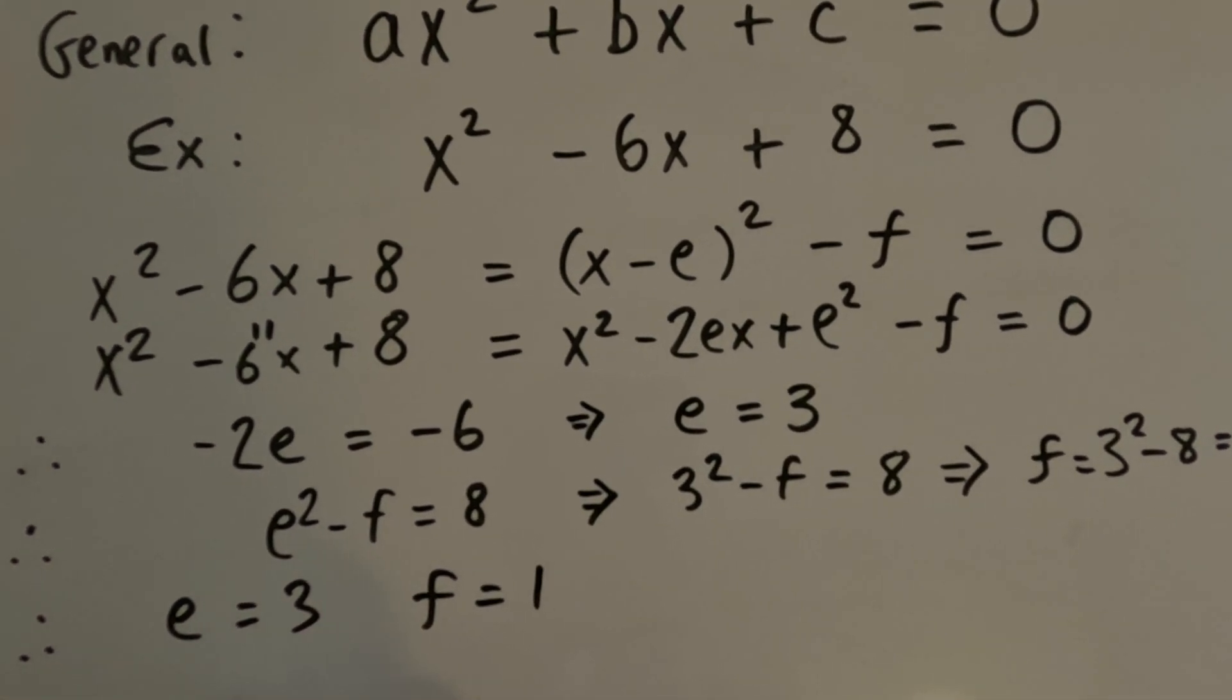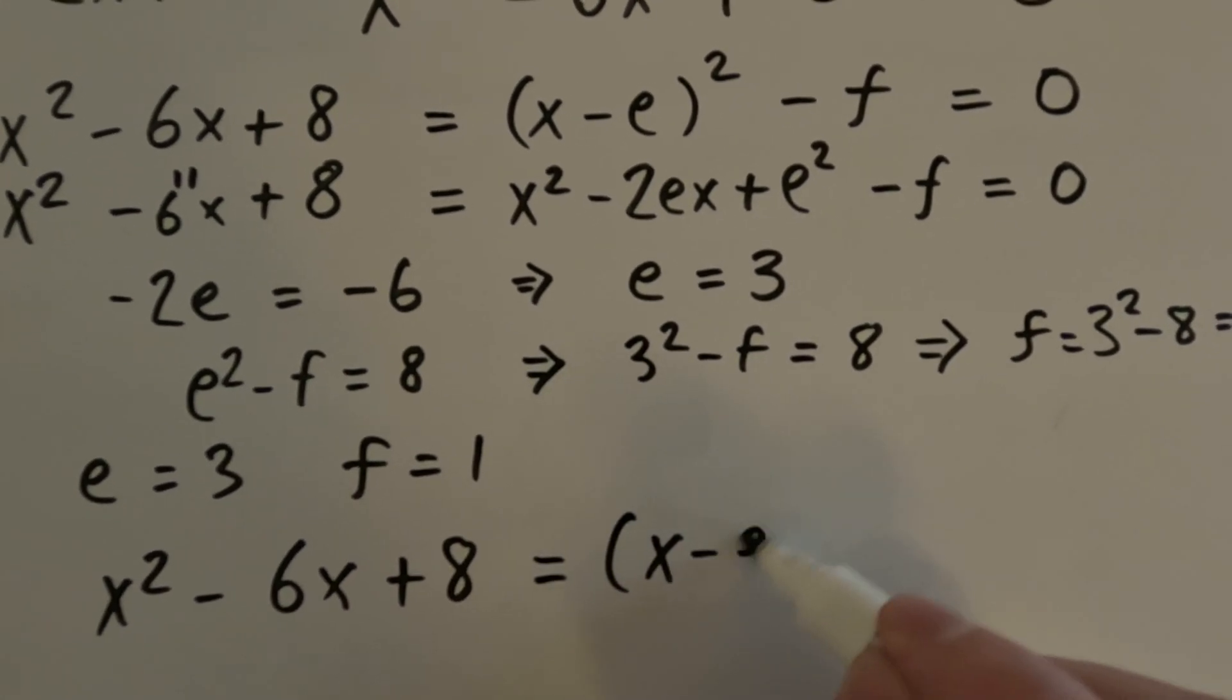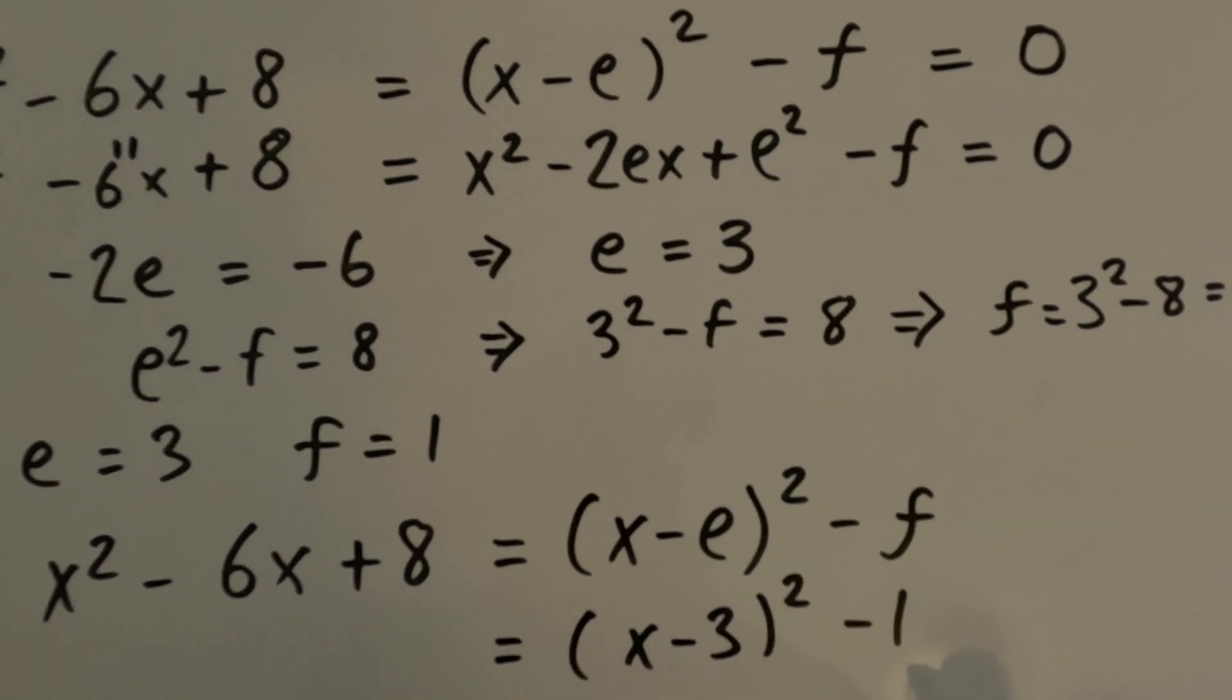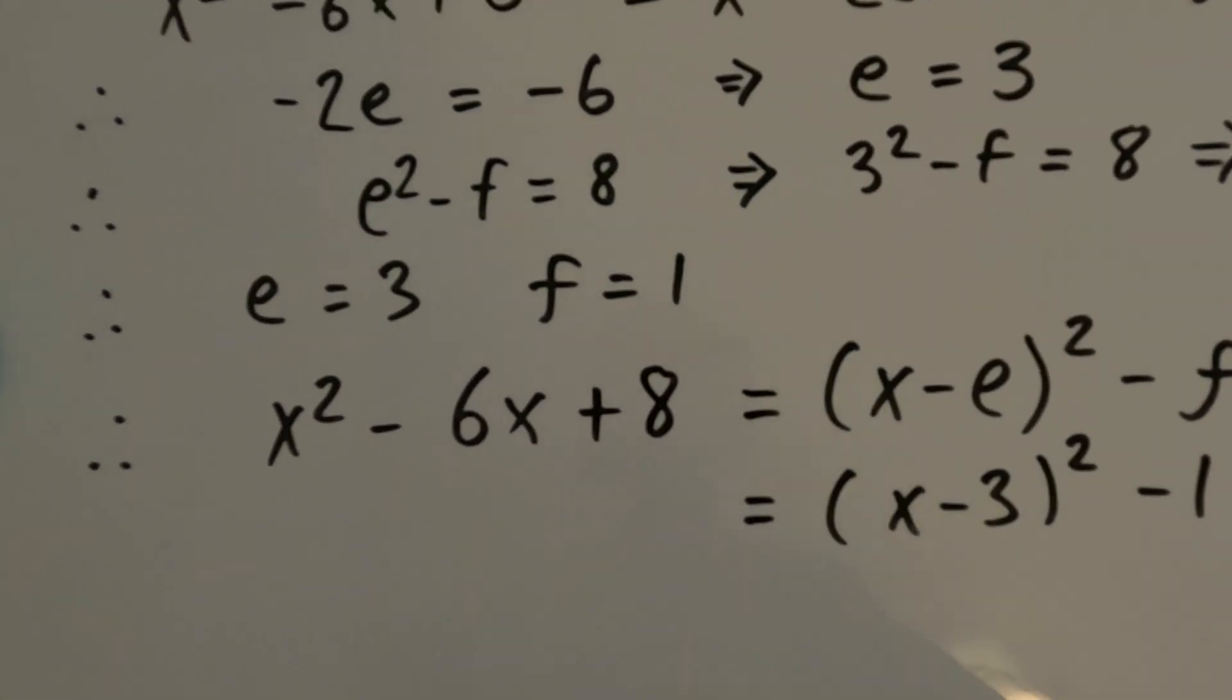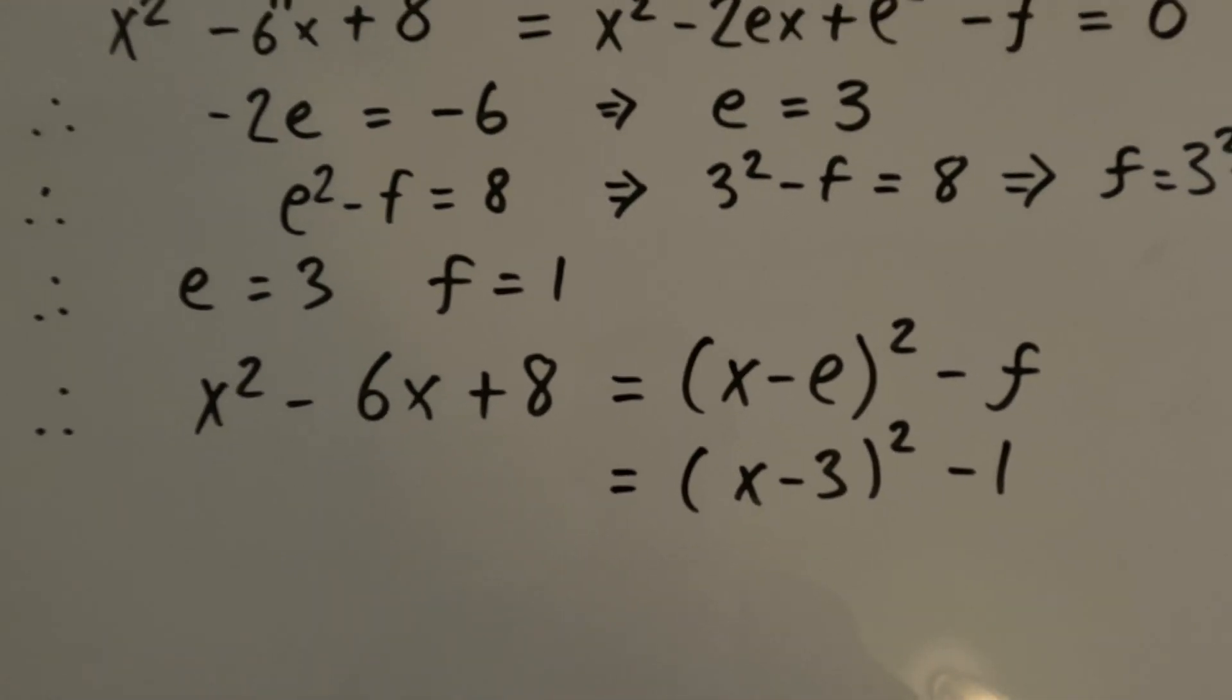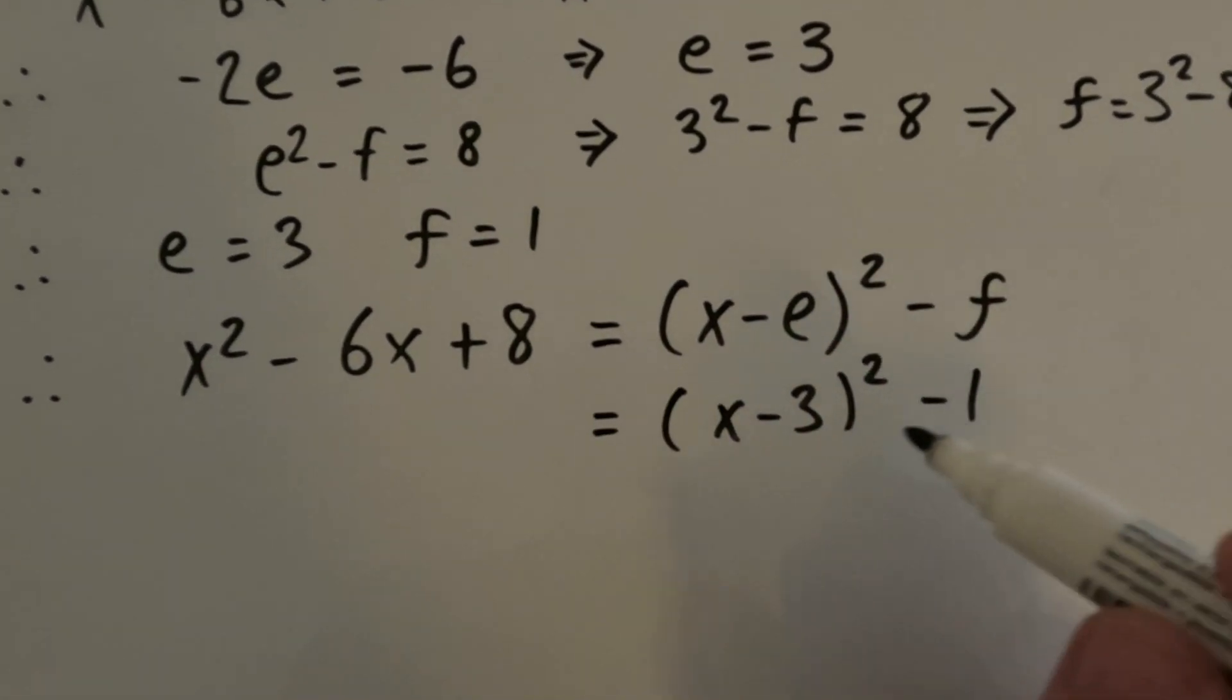So therefore, x squared minus 6x plus 8 equals x minus 3 squared minus 1. So there you go. We've transformed it into this form. So technically, we've completed the square on our original equation. x squared minus 6x plus 8 equals 0. x squared minus 6x plus 8 is equal to x minus 3 all squared minus 1. And that's it. We've completed the square on that. And now we can write down the solution very quickly. So if that equals 0,